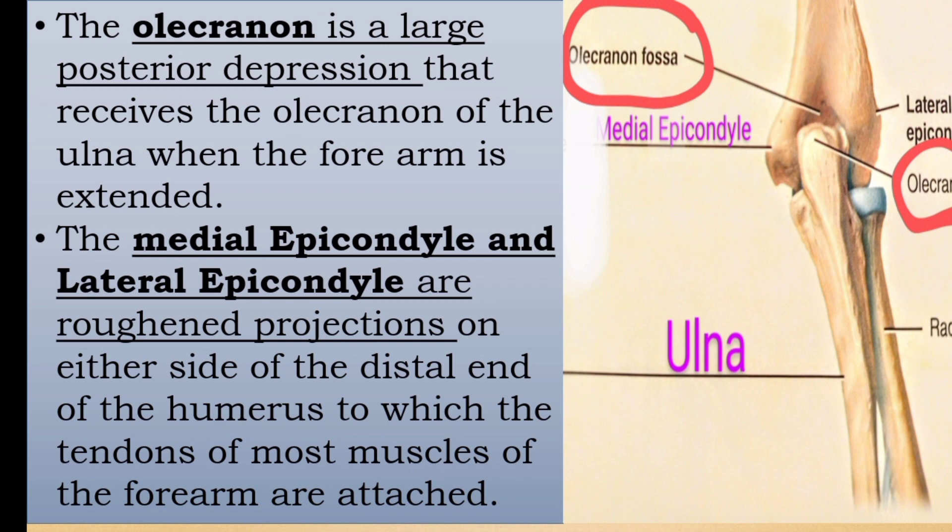The medial epicondyle and lateral epicondyle are rough projections on either side of the distal end of the humerus, to which the tendons of most muscles of the forearm are attached.